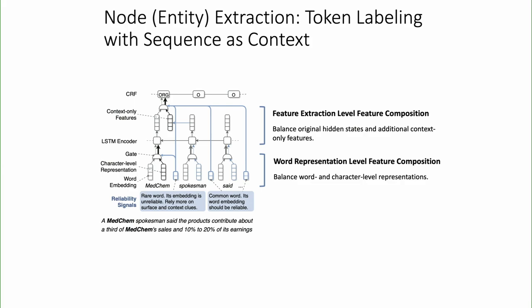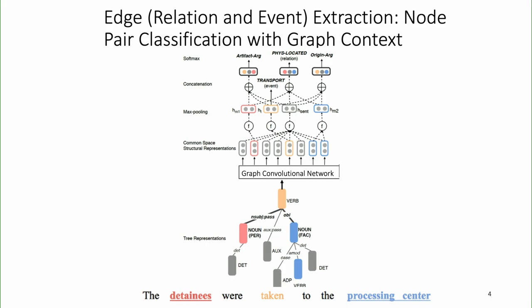The most popular model tries to look at the bidirectional context and the interdependency of labels. This task has been very successful for English. For relation and event extraction, the problem is more complicated because we need to look at very complex, long-range context. Usually people convert a sentence into a dependency graph or use semantic parsing to shorten the distance between nodes. For example, for a relation between a person and a facility, there may be four tokens between them in the sentence but only two edges in the tree.